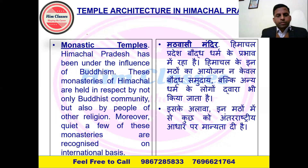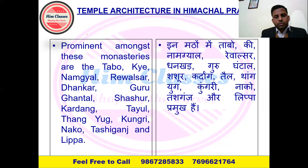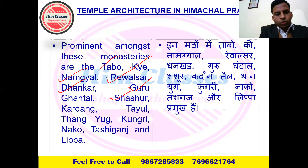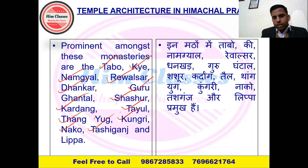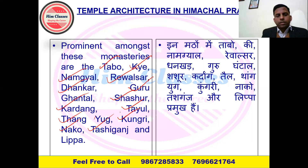The architectural type followed in Buddhist monasteries is called monastic architectural style. Prominent Buddhist monasteries in Himachal Pradesh include Tabu, Riki, Namgyal, Rewalsar, Dhankar, Guru Ghantal, Shashur, Kardang, Tayul, Hangyog, Ungri, Naako, Tashi Ganj, and Lippa Monastery. Buddhism has considerable influence in Himachal Pradesh — even Dharamsala's McLeod Ganj is also called Little Lhasa. Kindly remember these monastery names and the architectural style they are associated with.